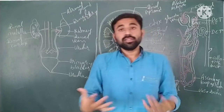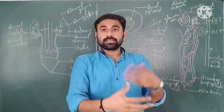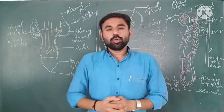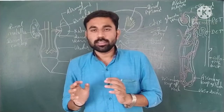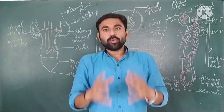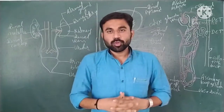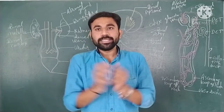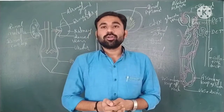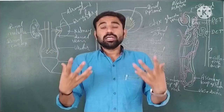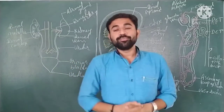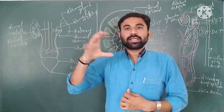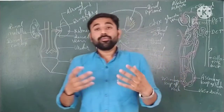In the previous lecture we discussed excretory products and different excretory organs in different animals. Today we start the excretory organ of human beings — the well-developed kidney. The tubular parts accumulate together to form a kidney, and this tubular part is known as uriniferous tubules, which is responsible for the formation of urine.